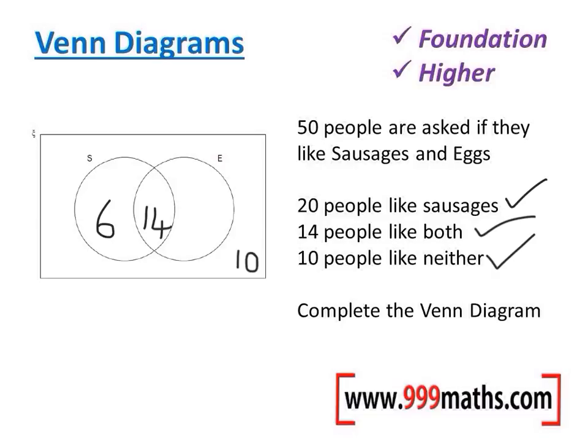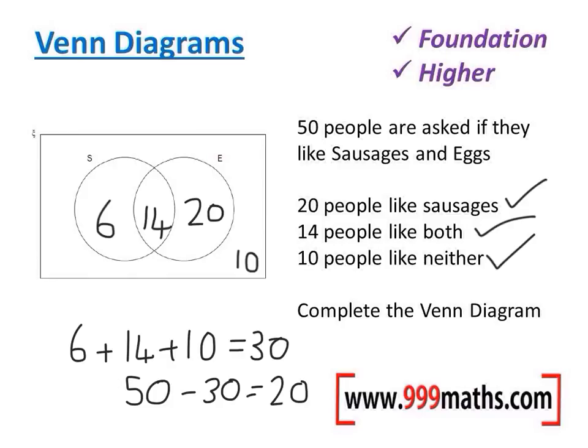Now that takes care of the fact that 20 people like sausages. There's one missing number here, and that's how many people like just eggs. Now we've got 14 people who like both, but we've also got a number on the right which needs to go in this section. Because at the top of the question it said there are a total of 50 people, we can add up the numbers that we've got so far: 6 add 14 add 10, and those numbers add up to 30. So because there's 50 altogether, 50 take away 30 gives me 20 left over, and it's 20 that like eggs.